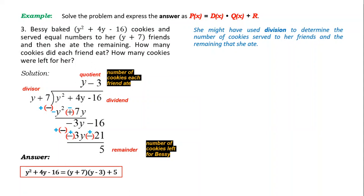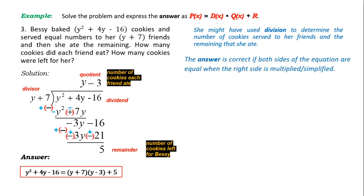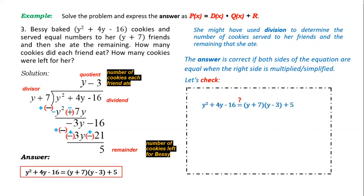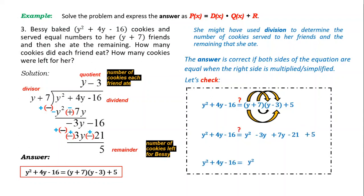Writing the final answer: P(y) = (y + 7)(y − 3) + 5. Let's check: y times y = y²; y times −3 = −3y; 7 times y = +7y; 7 times −3 = −21; bring down +5. Combining similar terms: −3y + 7y = 4y; constant: −21 + 5 = −16. Right side equals y² + 4y − 16 — equal to the left side. The answer is correct.